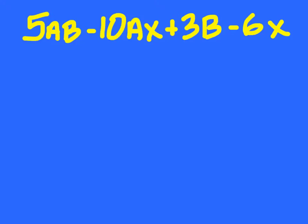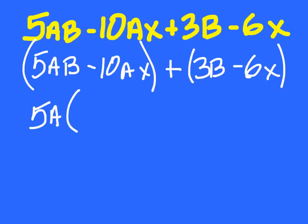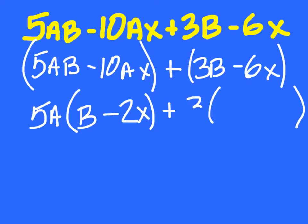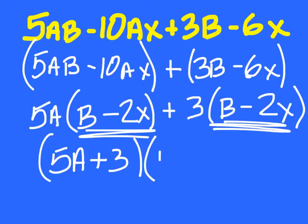Here's example one. What two terms am I going to start with? We can start with 5ab and minus 10ax — that's the first group. The second one would have to be 3b minus 6x. What can I take out of the first group? Five a — so I'm left with b minus 2x. What can I take out of the second group? Three — and I'm left with b minus 2x. Are these the same quantities? So it's (5a plus 3)(b minus 2x).